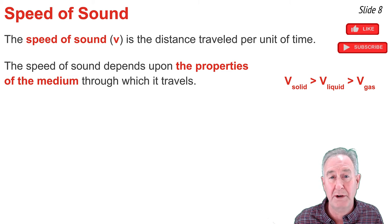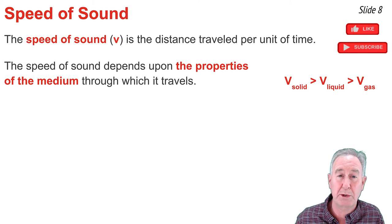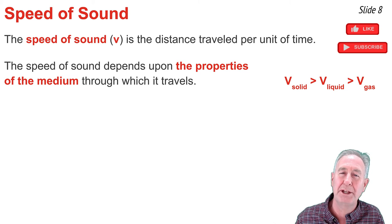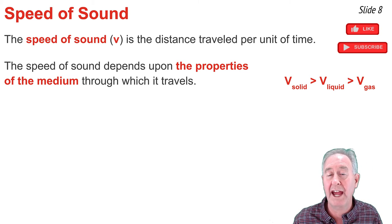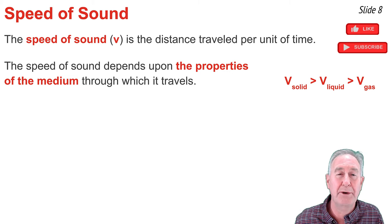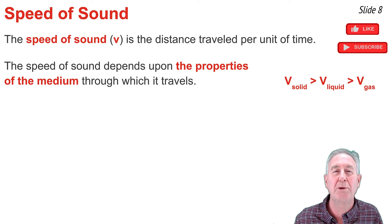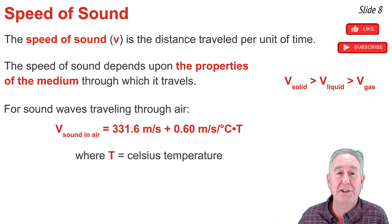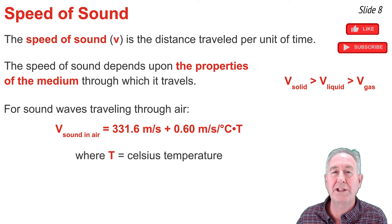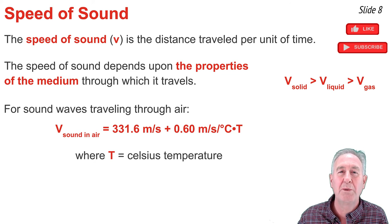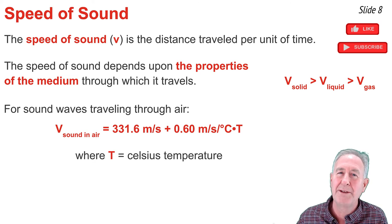For instance, the speed of sound through solid aluminum is about 5,100 meters per second. Through liquid water it's about 1,400 to 1,500 meters per second. And through the gas air, it's about 340 to 350 meters per second. For sound traveling through air, the main property that affects its speed is temperature. We can write the speed of sound in air as a function of temperature: speed equals 331.6 m/s plus 0.6 times the temperature in degrees Celsius. Substituting 20°C gives about 343.6 meters per second.